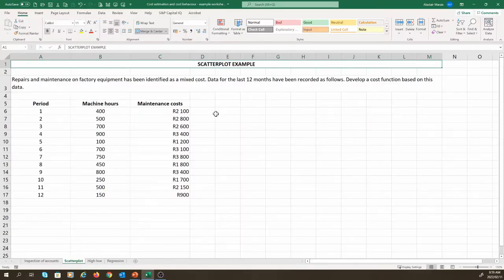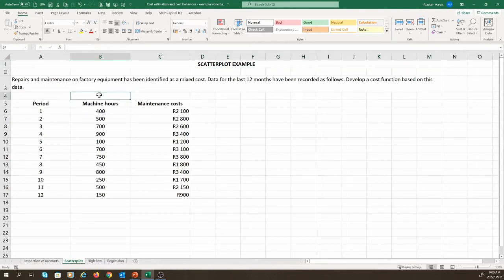So, we have a situation where repairs and maintenance have been identified as a mixed cost. We are then presented with data for the last 12 months and have been asked to develop a cost function. Excel has a graphing function that can help with this. First, we need to identify our X and Y variables. The activity of machine hours would be our X variable. While the cost, namely maintenance cost, would be our Y variable. It is generally best to have the X variable on the left, but if you don't, this can always be fixed. So, how do we go about graphing? What we need to do first is we need to highlight our data.